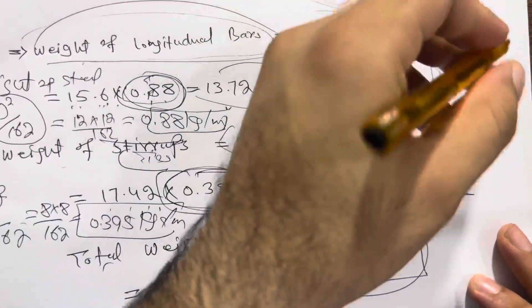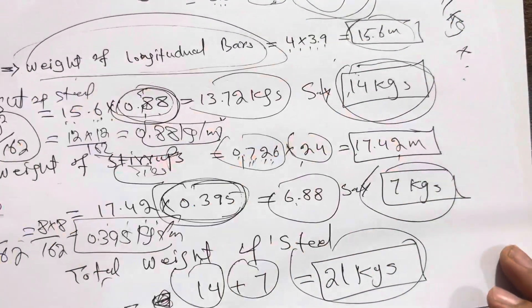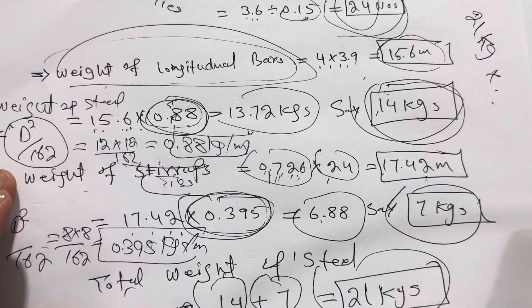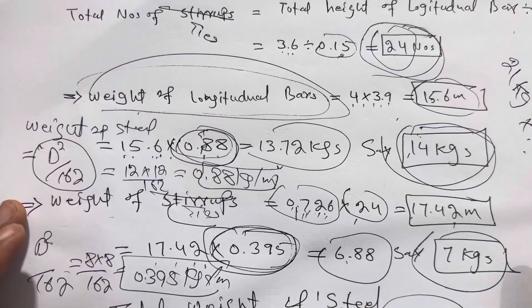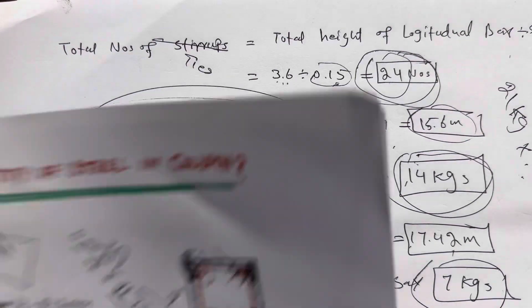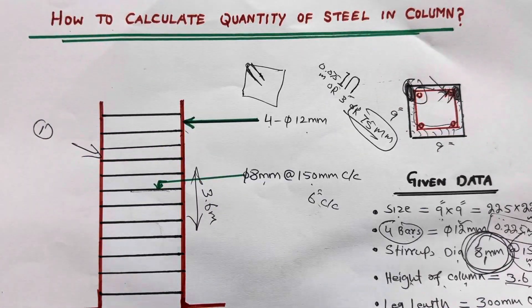So if you have 20, 24, or 30 columns, you can multiply that number by 21 kg to get the total weight of steel required. This is the easy way to calculate the quantity of steel in an RCC column. Thanks for watching — see you in the next video.